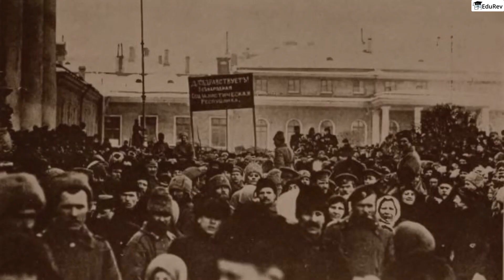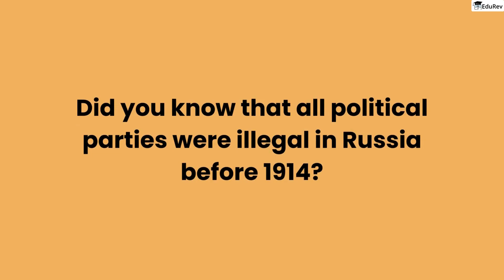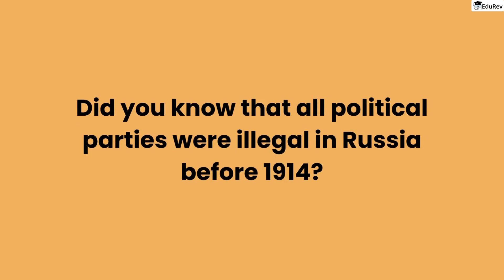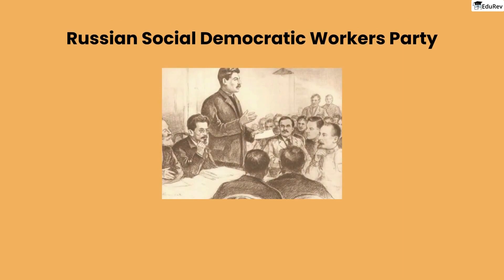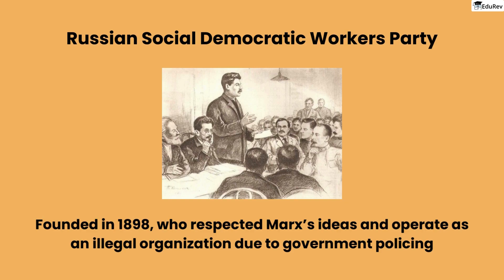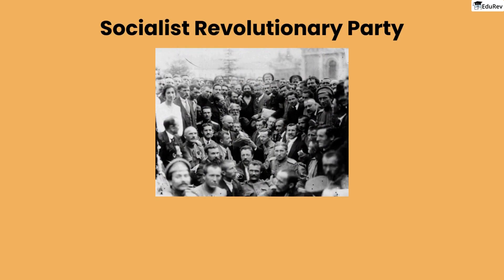Let's move on to the third topic: socialism in Russia. The seeds of political upheaval were sown in Russia long before the February Revolution of 1914. All political parties were illegal in Russia before 1914. The Russian Social Democratic Workers' Party was founded in 1898 by socialists who respected Marx's ideas, but had to operate as an illegal organization due to government policing. While some believed that the peasantry held the key to the revolution, others argued that it was the working class who would drive change. This disagreement eventually led to the formation of the Socialist Revolutionary Party in 1900, which sought to improve the lot of peasants and transfer land from the nobility to those who tilled it.